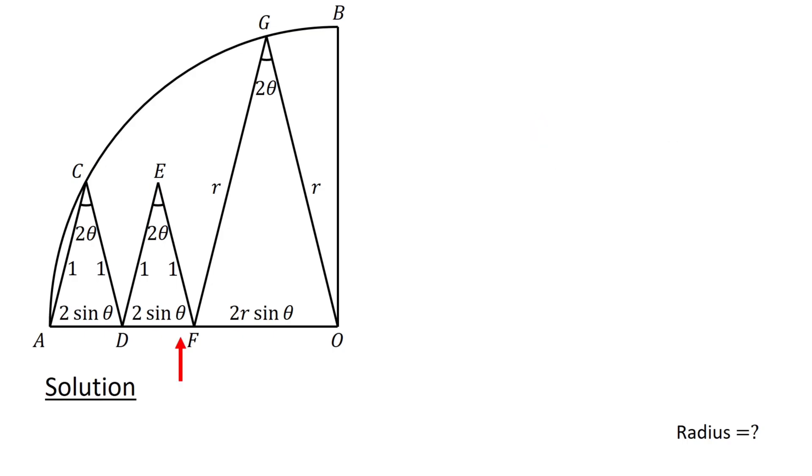Since OA is the radius of the quarter circle, we have R equals 2 sin theta plus 2 sin theta plus 2 R sin theta, or R equals 4 sin theta plus 2 R sin theta.